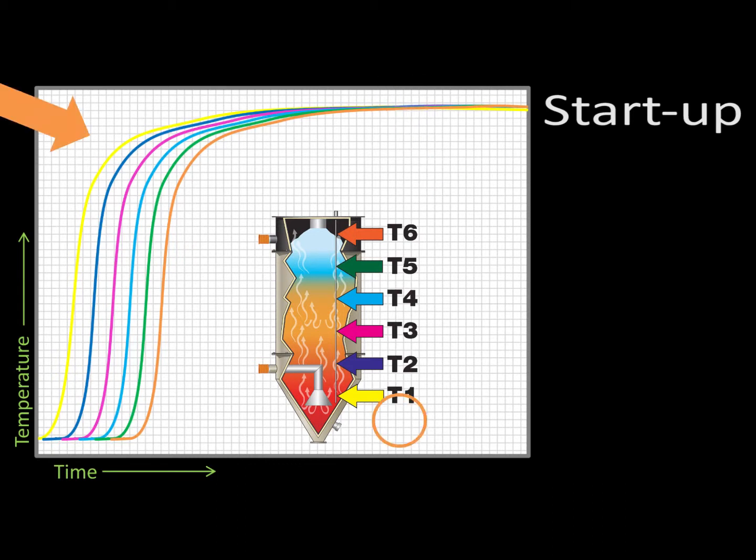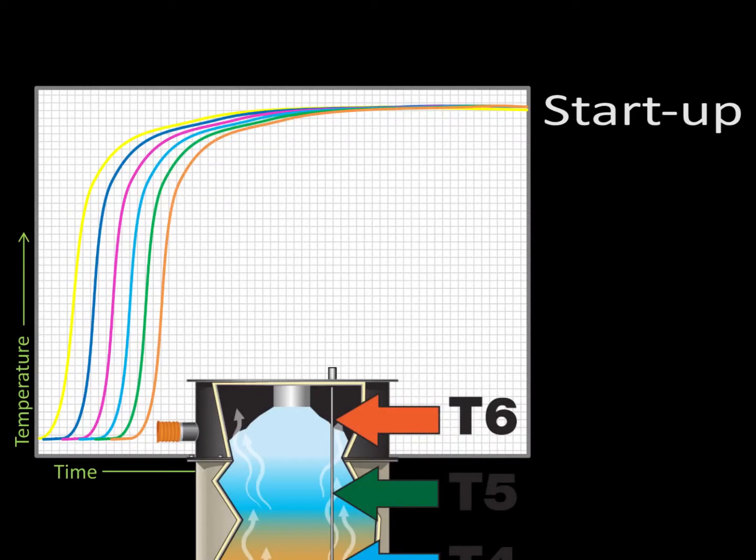Now, if processing does not start, that is, no material is taken away from the hopper, eventually all the probes will come very close to this process temperature, with the possible exception of the very top one, T6, if it is located above the material level. We'll discuss T6 a bit more in a moment.